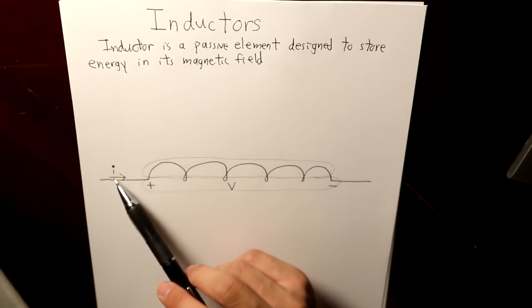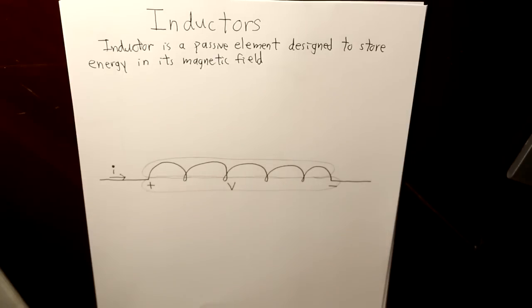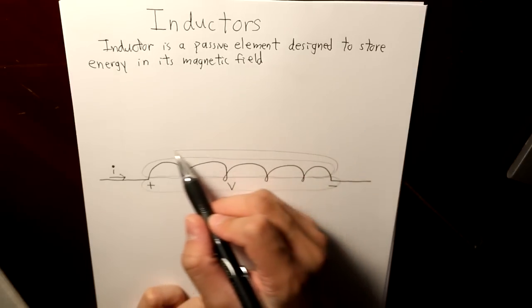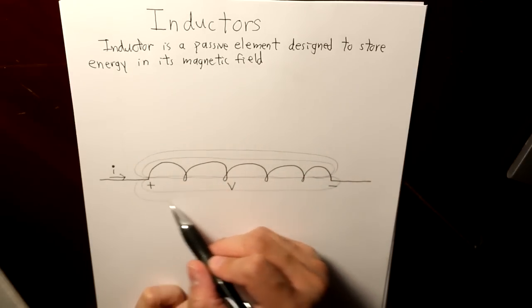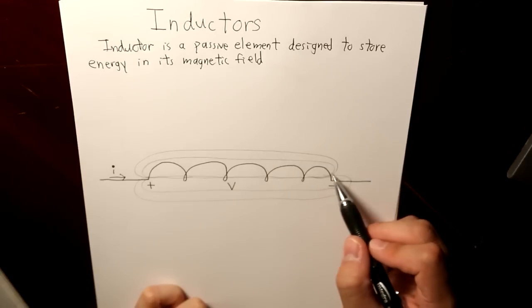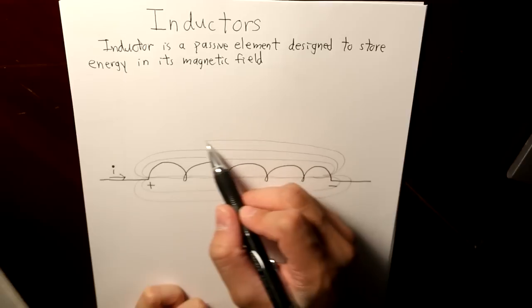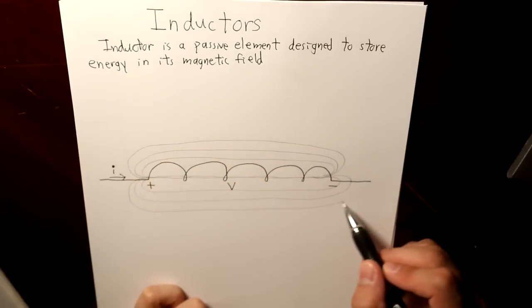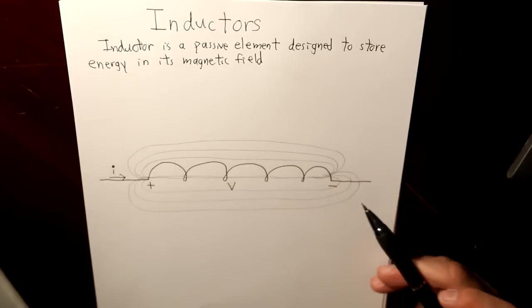Simply, when there's more current passing by, when there's more and more current, more flux lines like these are going to be drawn apart here, indicating that the inductor is storing more energy.